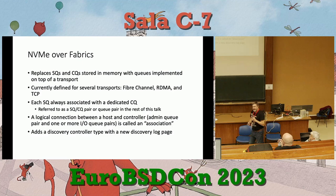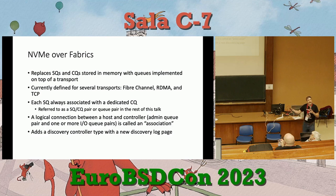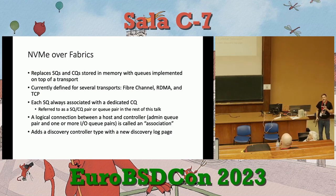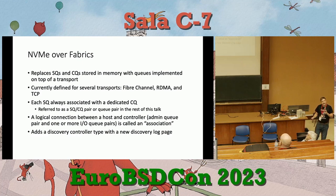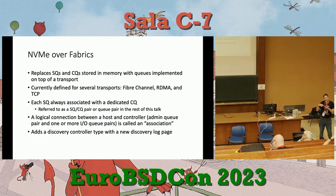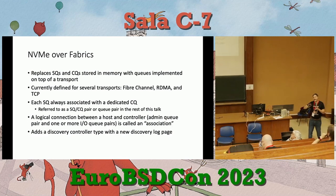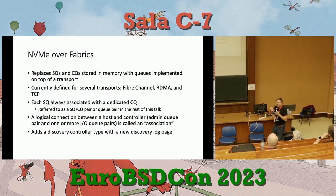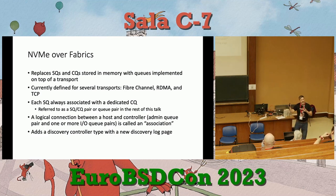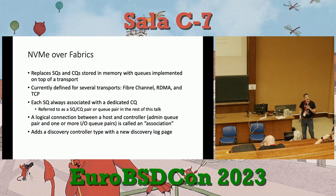Fabrics adds a discovery controller, which doesn't do IO like normal — it's a kind of name service, similar to iSCSI. You can connect to it almost like a DNS service for NVMe over Fabrics and find addresses and connection information for other controllers that actually do IO. There are a lot of things in NVMe over Fabrics, especially in TCP, that are very close to iSCSI.